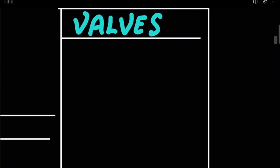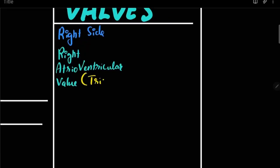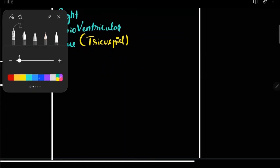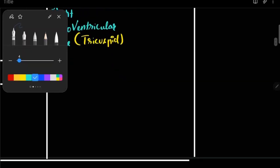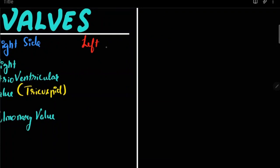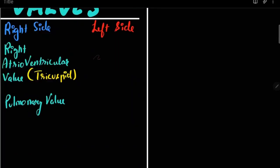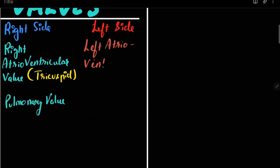Between the right atrium and right ventricle you have your right atrioventricular valve, which is the tricuspid valve — meaning it is made up of three flaps. Between the right ventricle and pulmonary artery you have your pulmonary valve. Between the left atrium and left ventricle you have your left atrioventricular valve.